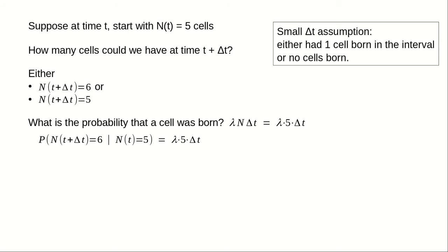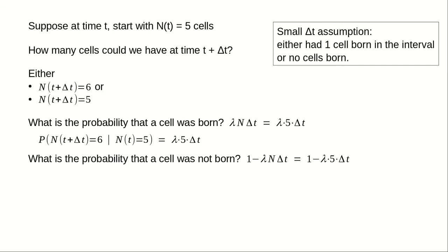We write the result as a conditional probability on the value of N of t plus delta t at the end of the interval, conditioned on the previous value N of t. The probability that N of t plus delta t is six, conditioned on the fact that N of t is five, is lambda times five times delta t. Since the only possibilities are that one cell was born or zero cells were born, the probability that zero cells were born must be one minus lambda times five times delta t. The probability that N of t plus delta t is five, conditioned on N of t being five, is one minus lambda times five times delta t.